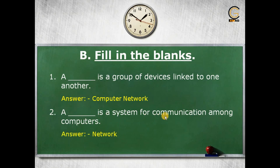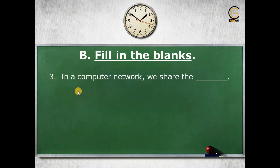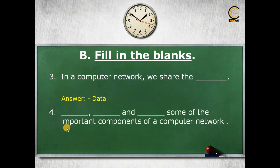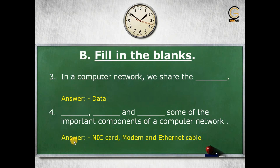Moving to the third fill-in-the-blank: in a computer network we share the dash. The correct answer is data, as in a computer network we share the data. Fourth question: dash, dash, and dash are some of the important components of a computer network. The answer is NIC card, modem, and ethernet cable — these three components are used to make a computer network.